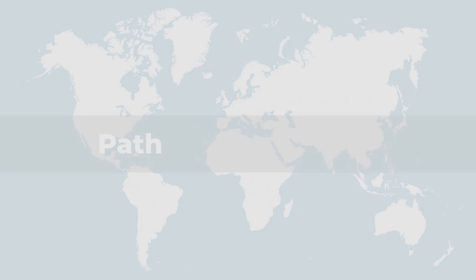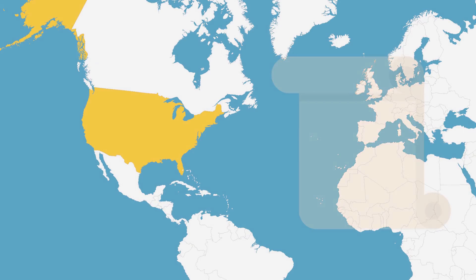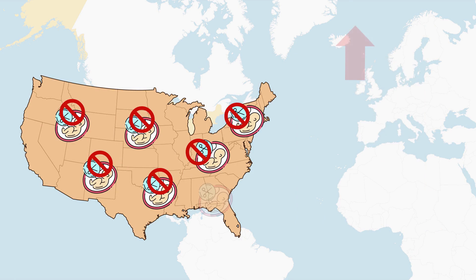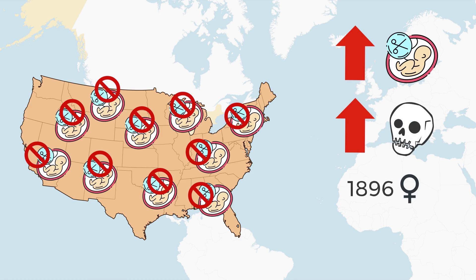Path to Roe v. Wade: over the next several decades, despite legal punishments, abortion continued to occur mostly underground. The prevalence of unsafe illegal abortions led to an increasing death toll, with an estimated number of almost 2,700 women dying in 1930. In 1964, Gerri Santoro, an American woman who died due to an illegal abortion, became the symbol of an abortion rights movement.